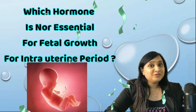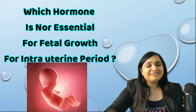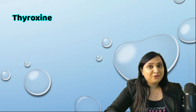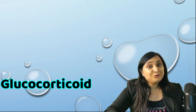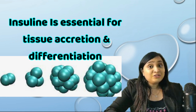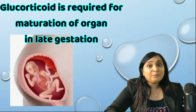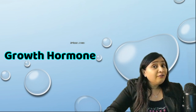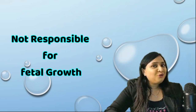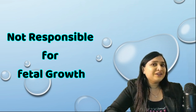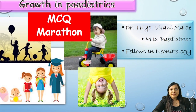Which hormone is not responsible for fetal growth in the intrauterine period? Options are thyroxine, insulin, growth hormone, or glucocorticoid. Thyroxine is responsible for skeletal maturation. Insulin plays an important role in tissue accretion and differentiation. Glucocorticoid is responsible for maturation of organs like liver, lung, and GIT in late gestation. However, growth hormone, though present in very large amounts, is not responsible for fetal growth in the intrauterine period. Correct answer: growth hormone.